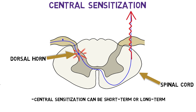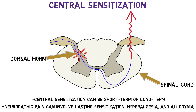Pain sensitivity typically returns to baseline after healing, but nerve or central pathway damage can cause lasting sensitization leading to neuropathic pain, which can be an intensely painful, chronic, and difficult-to-treat condition that can involve both allodynia and hyperalgesia. Neuropathic pain can occur in conditions that involve nerve damage, such as diabetes, shingles, multiple sclerosis, stroke, and trauma.